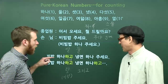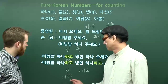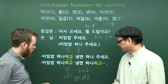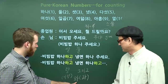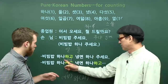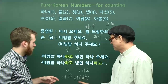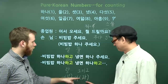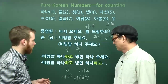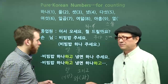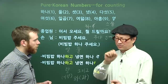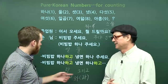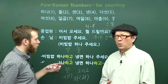와 and 과 can also mean 'and.' Again, it depends on whether the word ends in a final consonant or final vowel. 와 goes with a final vowel — for example, 하나 has no 받침, so 하나와. 과 goes with a final consonant — for example, 김밥과. But 와 and 과 are more used in written Korean. In spoken Korean, use 랑, 이랑, 하고, or 그리고.